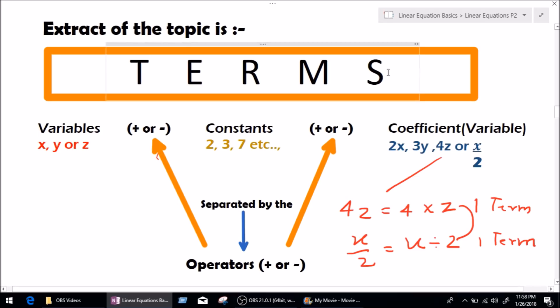Again, what are terms? Terms are variables like x, y, z. And constants like 2, 3, 7. And coefficient variable like 2x, 3y, 4z or x divided by 2.